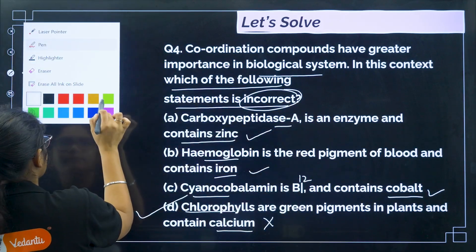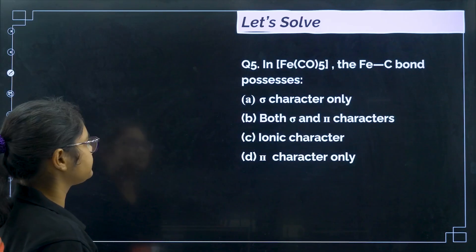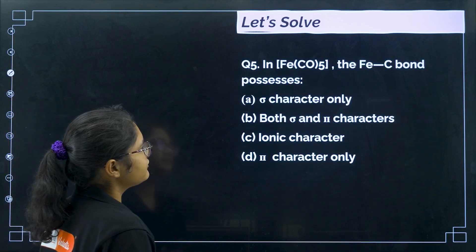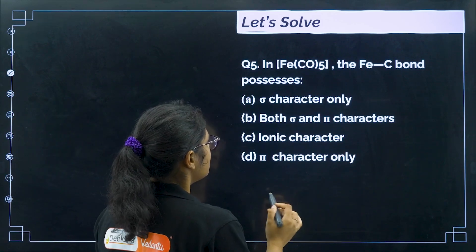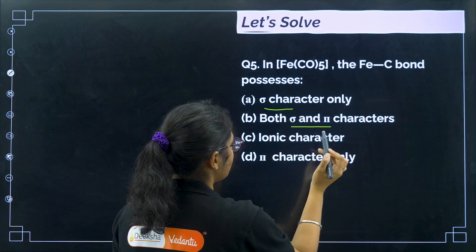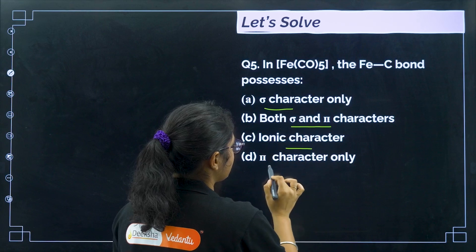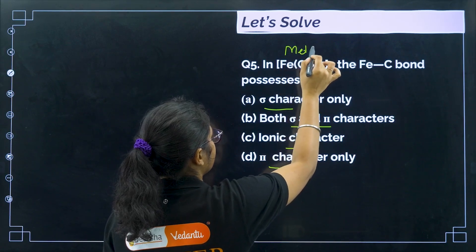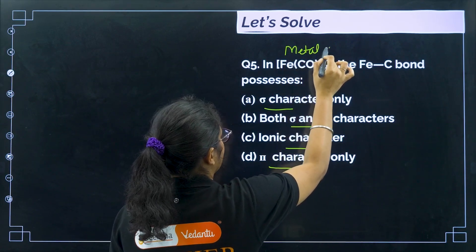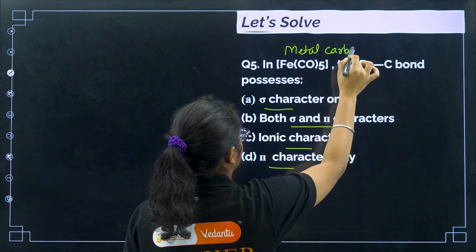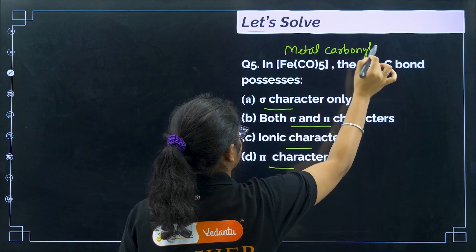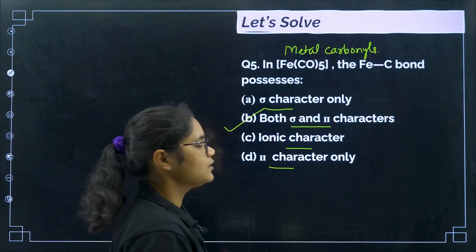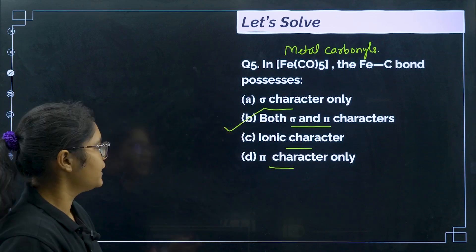In Fe(CO)₅, the Fe–C bond possesses both sigma and pi character. We have seen this is a metal carbonyl, and in metal carbonyls there are both sigma and pi bonds. The correct answer is option B.